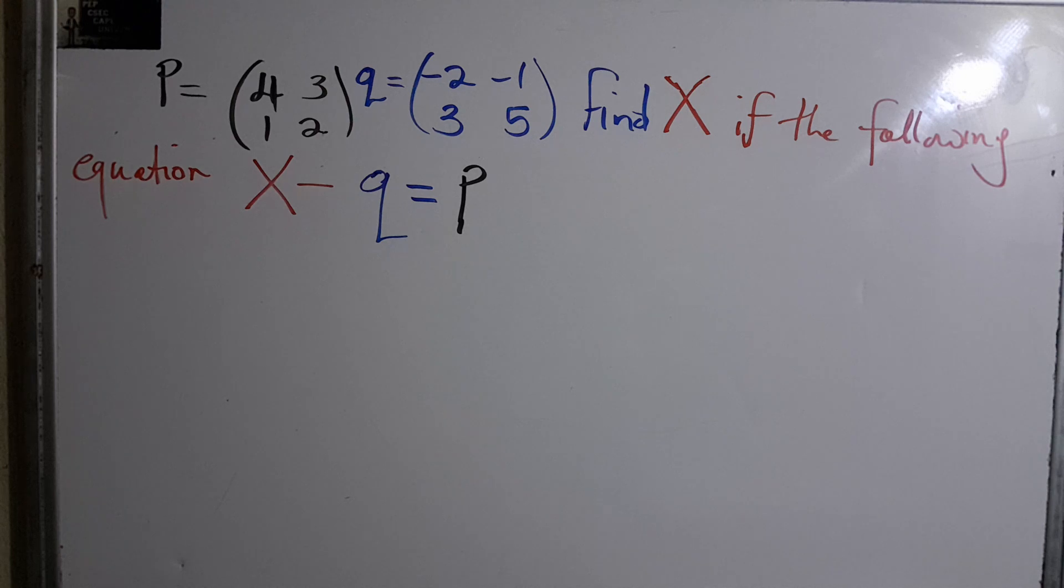The equation is X minus Q equals P. They haven't given us the value of X, so we need to find that. However, they've only given us Q and P, so to do that we need to transpose and make X the subject of the formula.